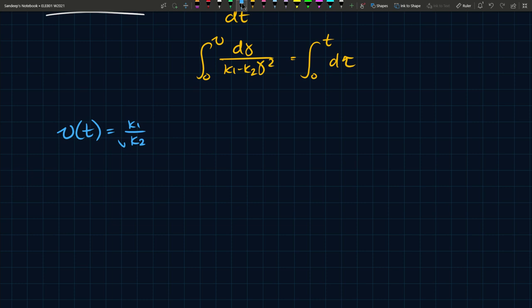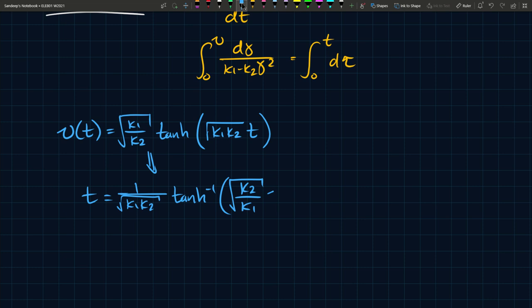So the solution to this equation is v(t), and this is an integral that you can solve using trigonometric substitution. I won't do that here because it's a tedious process. You should be able to prove that it is sqrt(k_1/k_2) times the hyperbolic tangent of sqrt(k_1 k_2) times t. This implies that t equals 1 over sqrt(k_1 k_2) times hyperbolic tangent inverse of v times sqrt(k_2/k_1). So these are two expressions - this is the speed and this is the time.